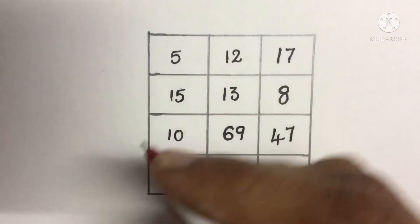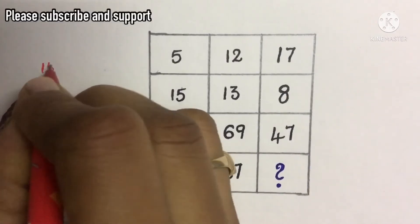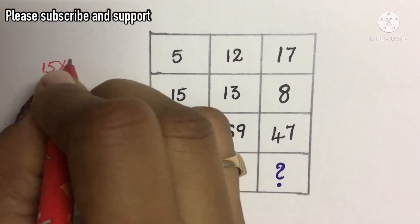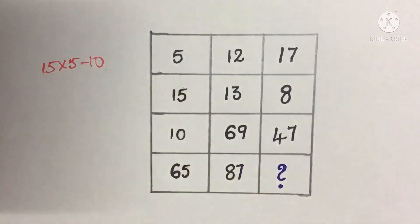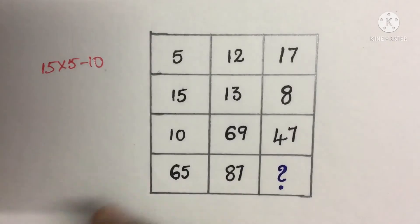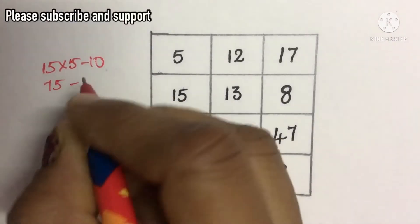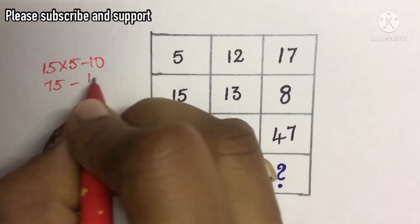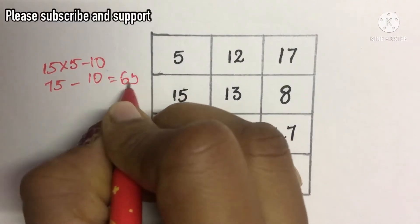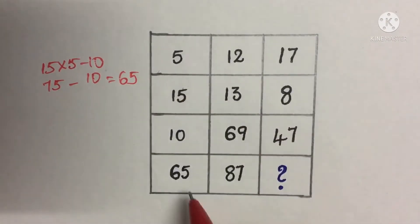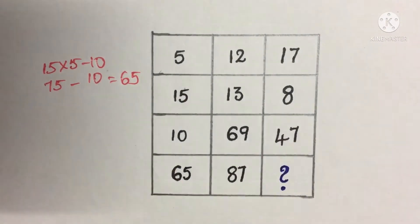The process here is: 15 × 5 − 10. So 15 × 5 is 75, minus 10 equals 65. The answer is 65. This process is what we follow here.